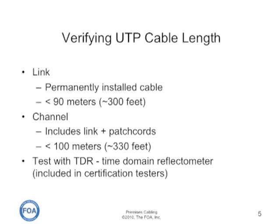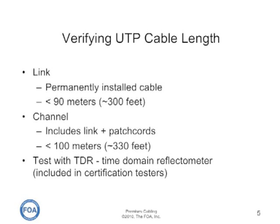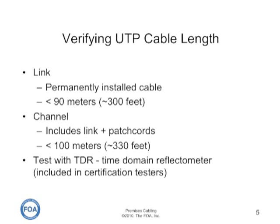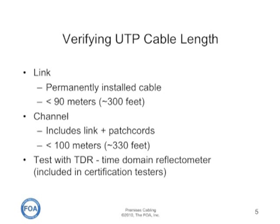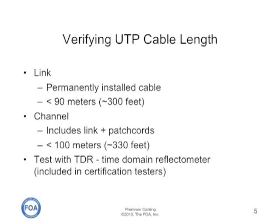The next test is to verify the UTP cable length. In a link, or the permanently installed cable, it must be less than 90 meters or about 300 feet. The channel, which includes the link plus patch cords, must be less than 100 meters. You can test this with a TDR, or time domain reflectometer, which is a tool included in all certification testers as well as being available as a standalone tester.